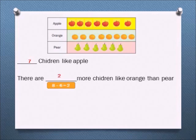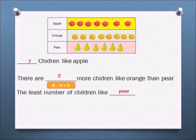eight minus six equals two. There are two more children who like orange than pear. The least number of children like pear.